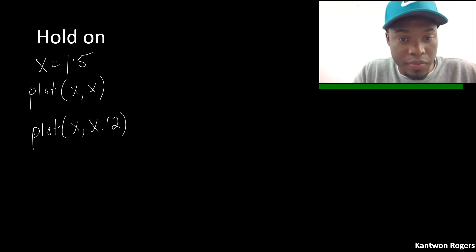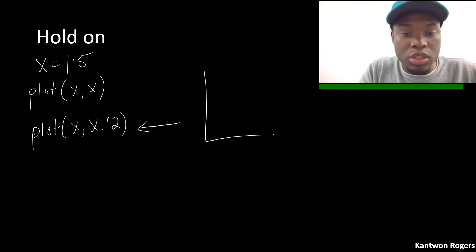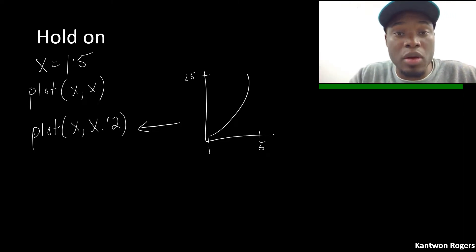So if I were to do this what I would get is just a plot of x squared. My plot would just look like this, where this would be 5, this would be 1, this would be 25. And that's because anytime you call a plot command it erases the previous plot on my figure.